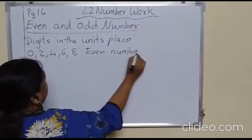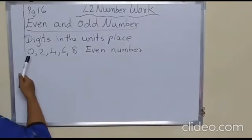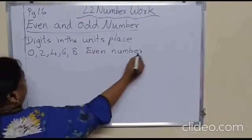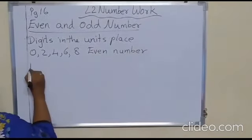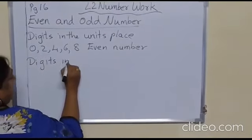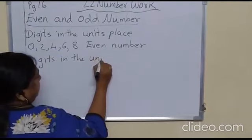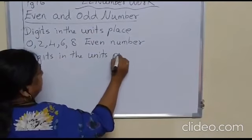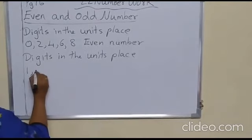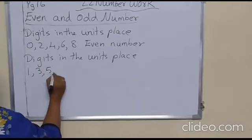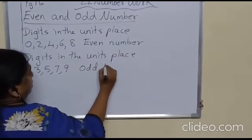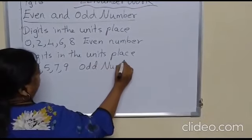Did you understand, children? In the units place, if there is 0, 2, 4, 6, or 8, then it is an even number. And if the digit in the units place is 1, 3, 5, 7, or 9, it is called an odd number.